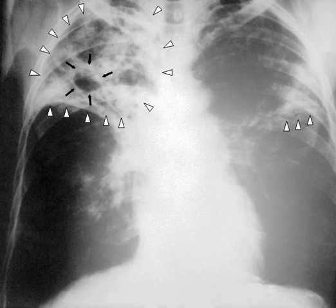The upper lung lobes are more frequently affected by tuberculosis than the lower ones. The reason for this difference is not clear. It may be due to either better air flow, or poor lymph drainage within the upper lungs.